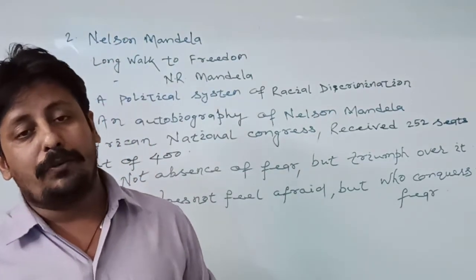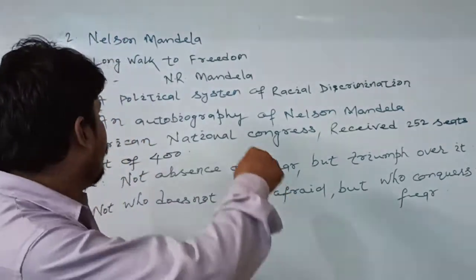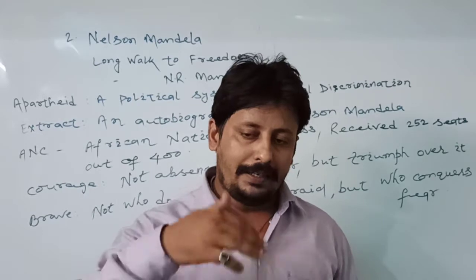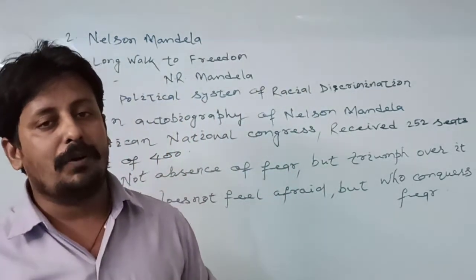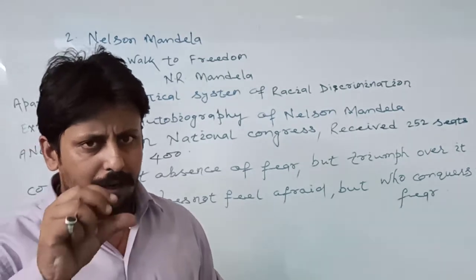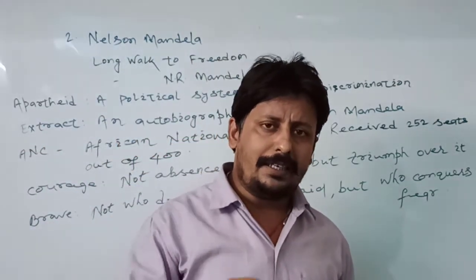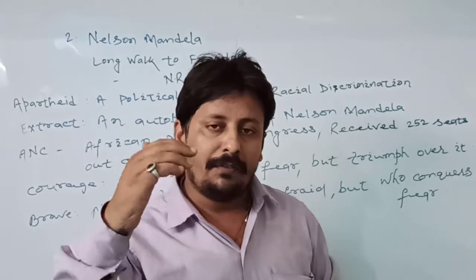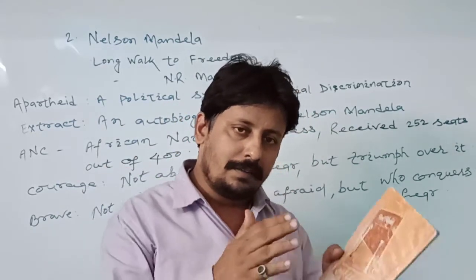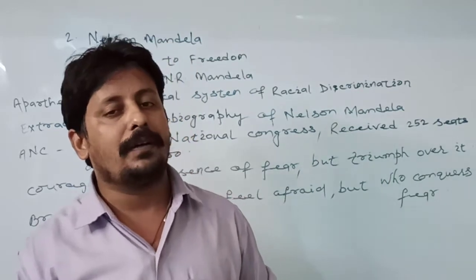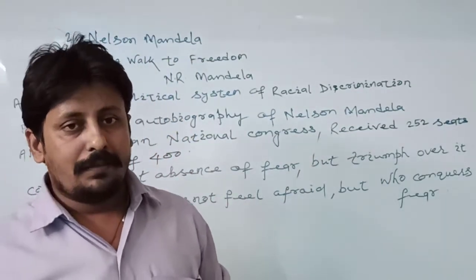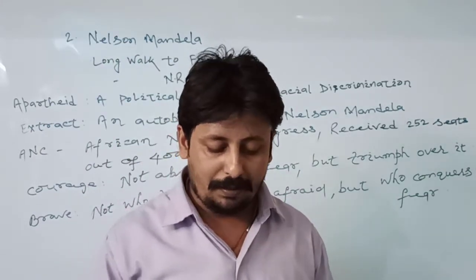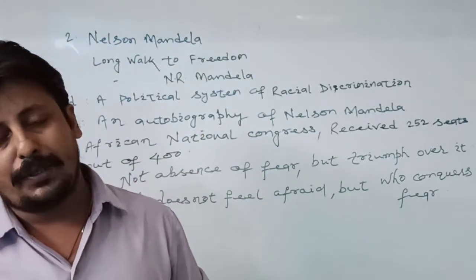Whenever you open the book, you will find first of all it is about apartheid. Apartheid was a political system of racial discrimination. This system was based on the color of skin — there was discrimination among people on the basis of skin color. What happened in South Africa is described here in this chapter.